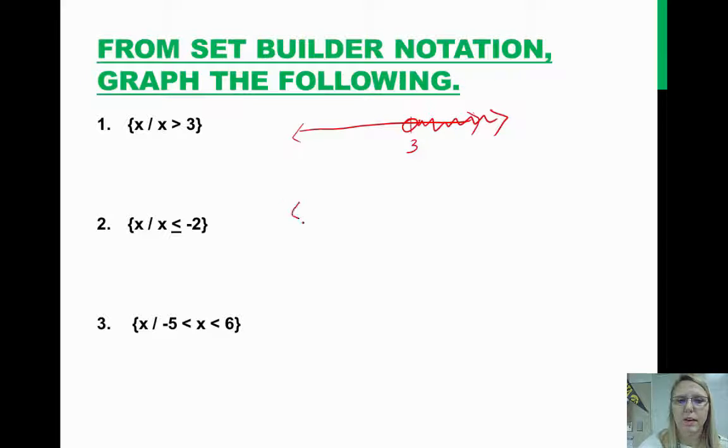On this one, we have x is less than negative 2. So negative 2, and notice it has a line underneath it, so that means it's going to be a closed dot. And since x is smaller than negative 2, that means it could be negative 3, it could be negative 4. So we'll go this direction.